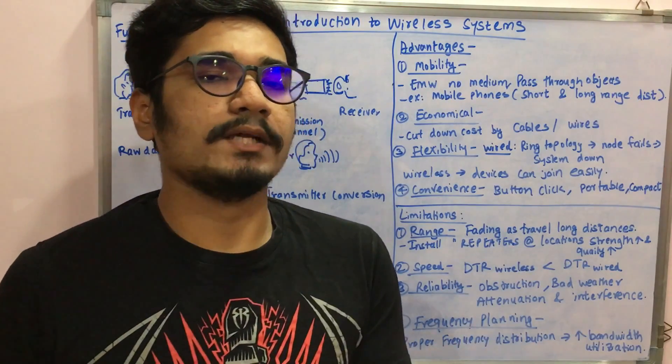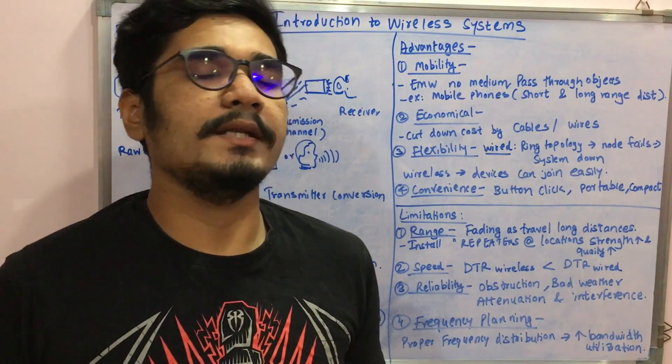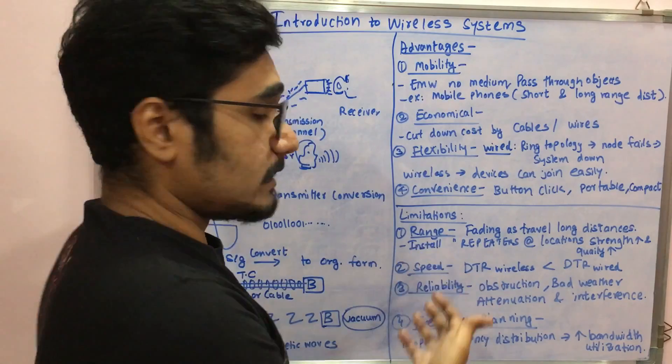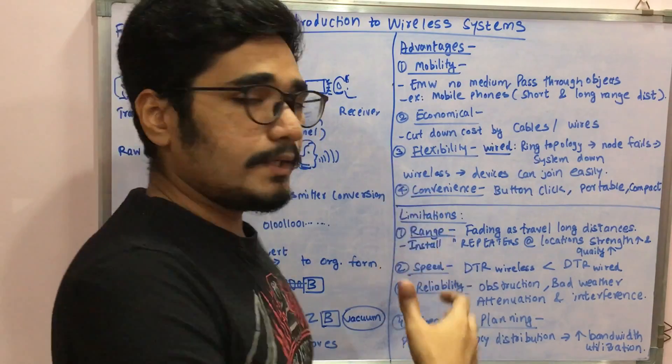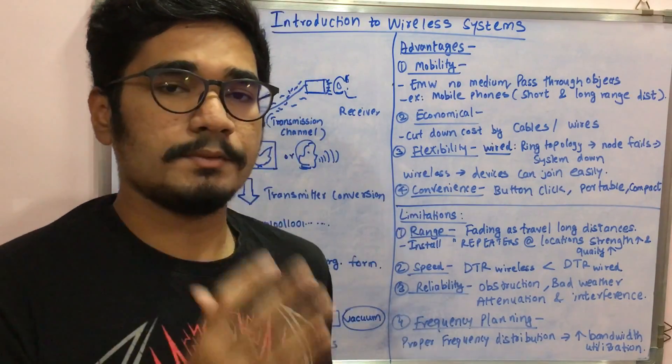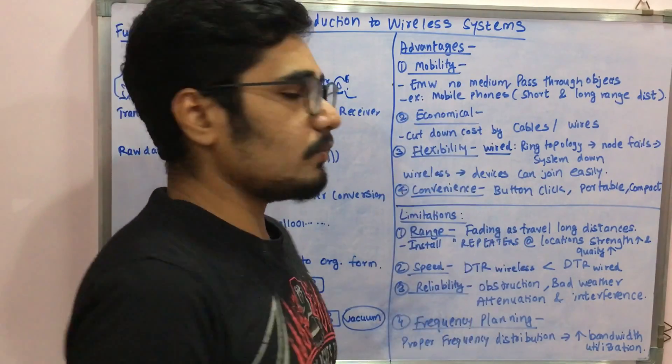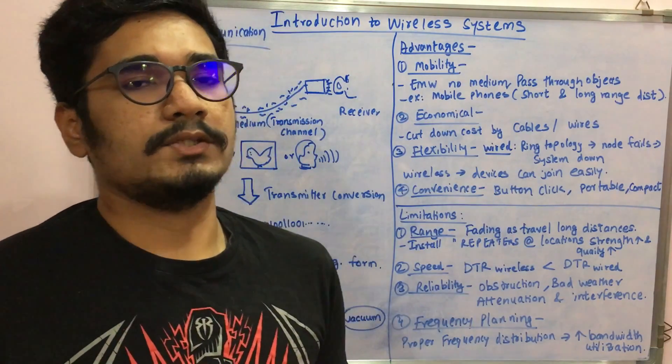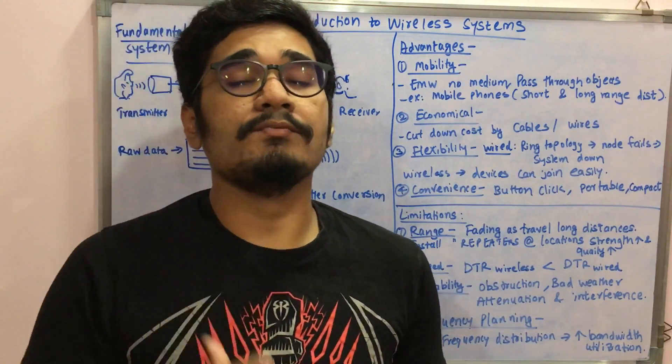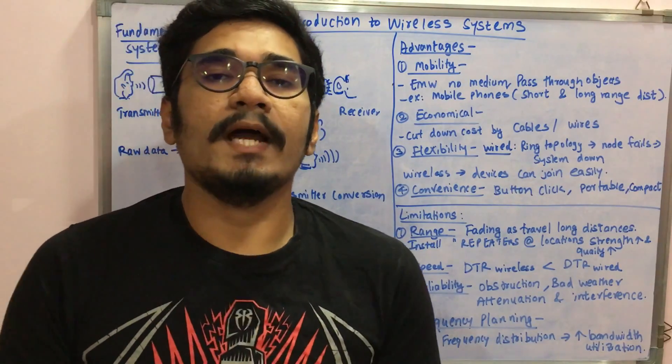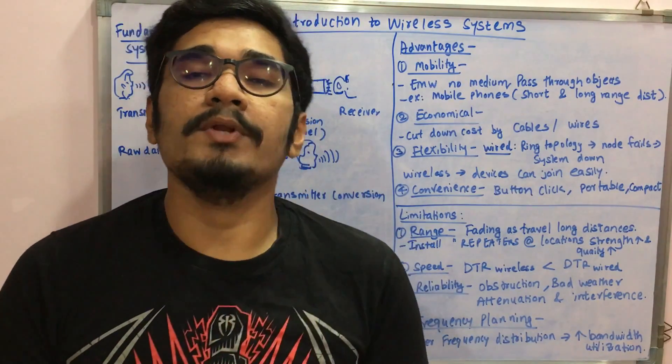Next is the frequency planning. You need to have a proper frequency distribution laid out in order to increase your bandwidth utilization, else the bandwidth just laid out for that data transfer would get lost. Well, that was all regarding the fundamental communication systems and the advantages and limitations with the wireless technology.